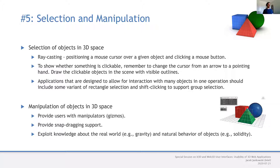If possible, provide snap dragging — snapping to surfaces — and exploit knowledge about real-world gravity and natural behavior of objects. For example, solidity: when placing a chair in 3D space, you know it's typically placed on the floor with a certain orientation, so the placement should be restricted to that.